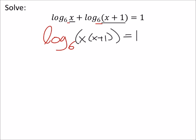Now if I change this into exponential form it should be a little bit easier to solve because we don't know what x is yet. In other words, I've got six to the power of one equals, I can distribute this, x squared plus x.